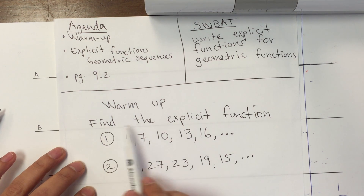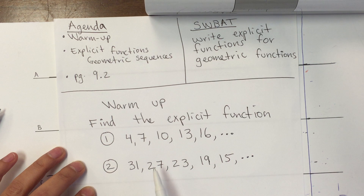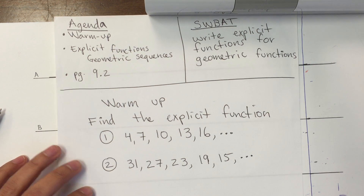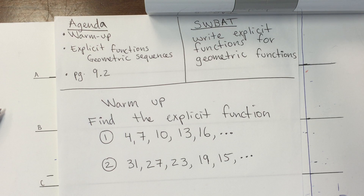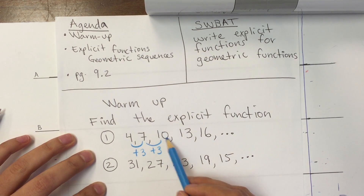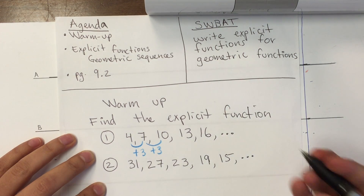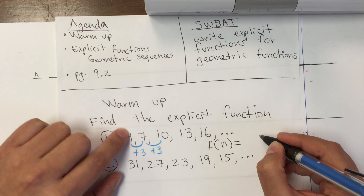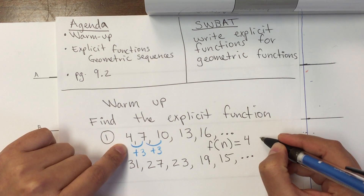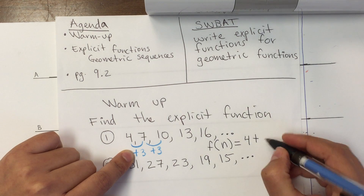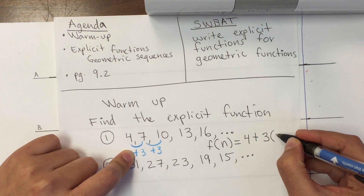Okay, so it says find the explicit function, and remember we learned this yesterday — these are arithmetic sequences, which means that I'm adding each time. On the first one, I'm adding 3 every time: plus 3, plus 3, plus 3. So for the explicit function, we write f(n) equals the first value, which is 4, plus 3, multiplied by n minus 1.